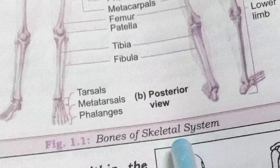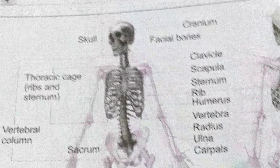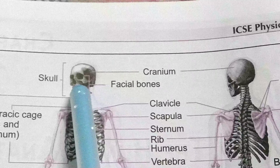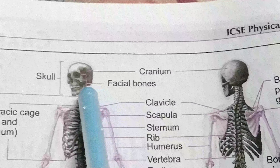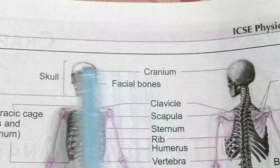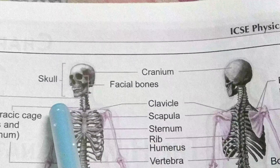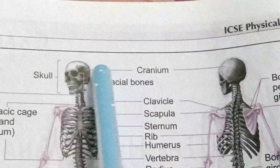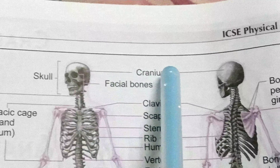Look at the picture here showing the bones of the total skeletal system. Starting with the skull, which has two parts: the cranium and the facial bones. Next is the collar bone, known as the clavicle.